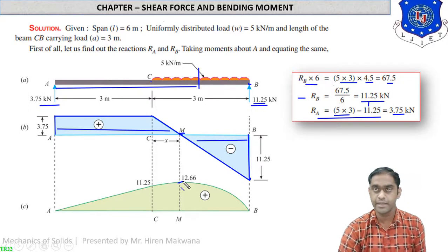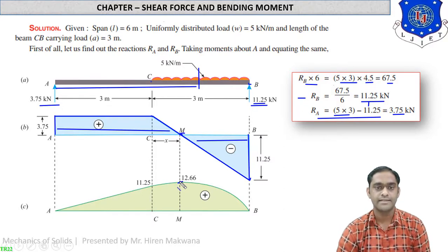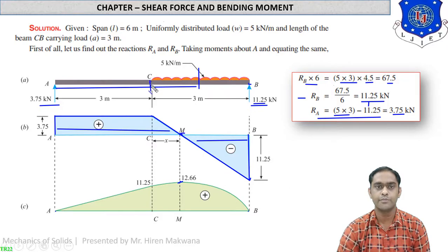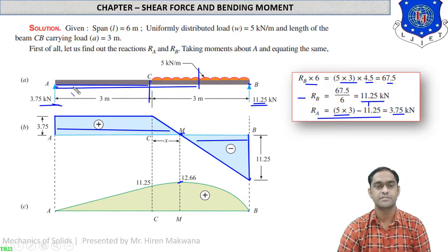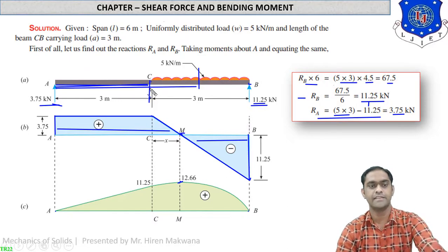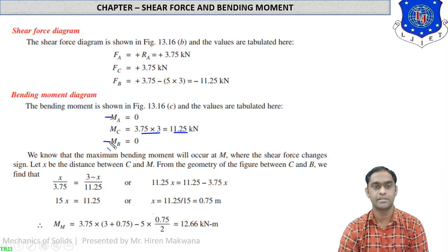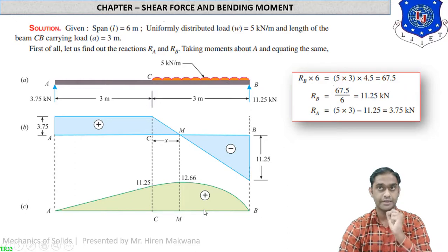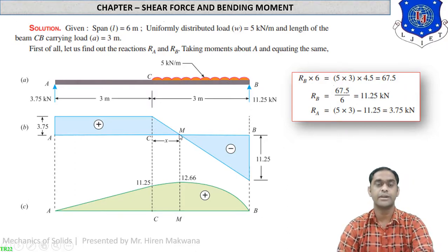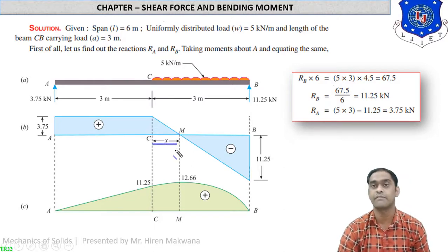When the shear force is zero at any point on the beam, the bending moment is maximum. The maximum bending moment occurs at point N (also called M in calculations). According to our rule, moment at A and moment at B are zero. Moment at C from the left side: 3.75 kN × 3 meter = 11.25 kNm. To find the moment at point M we need the distance X from C to M, which is not directly available.